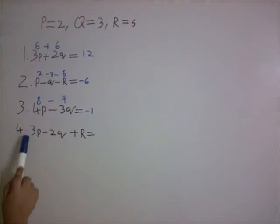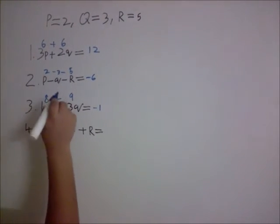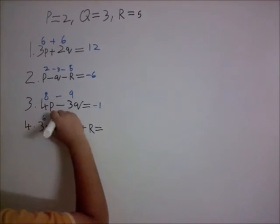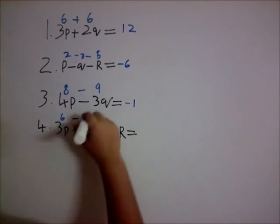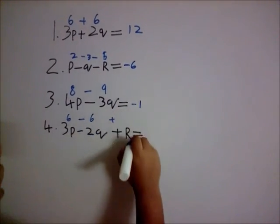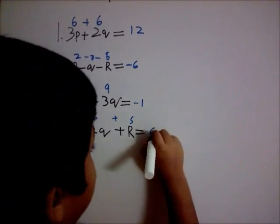The fourth question, 3P minus 2Q plus R. 3P is equal to 6 because P is equal to 2 and 3 times 2 is 6. Minus 2Q, Q is equal to 3 and 2 times 3 is 6. Plus R is equal to 5, which is 6 minus 6 is 0, and 0 plus 5 is 5.